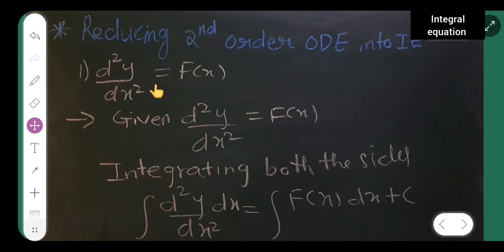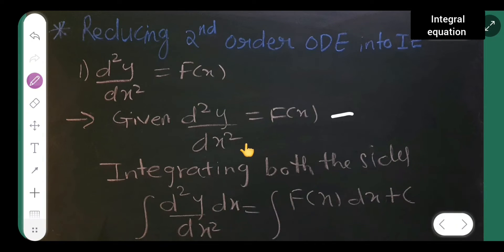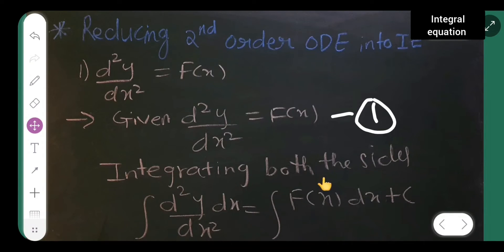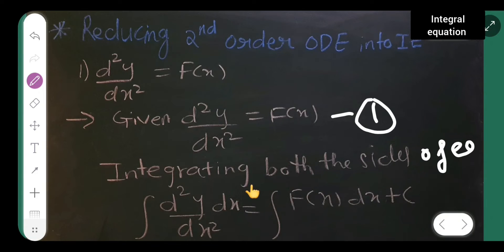Now, this is the given equation — whatever is given, you all have to write it down. Consider this as equation 1. And then, integrating both sides of equation 1.